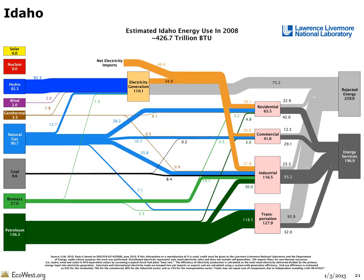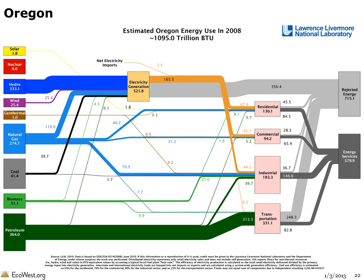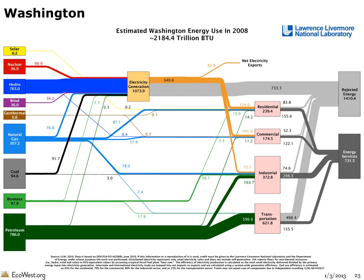Coal may be king for electricity generation in many states in the Intermountain West, but it's hydropower that dominates the power portfolios in the Pacific Northwest. Here's Idaho, which imports a good deal of its electricity from surrounding states. In Oregon, hydropower dams account for 64% of electricity generation, while in Washington State it's 71%.